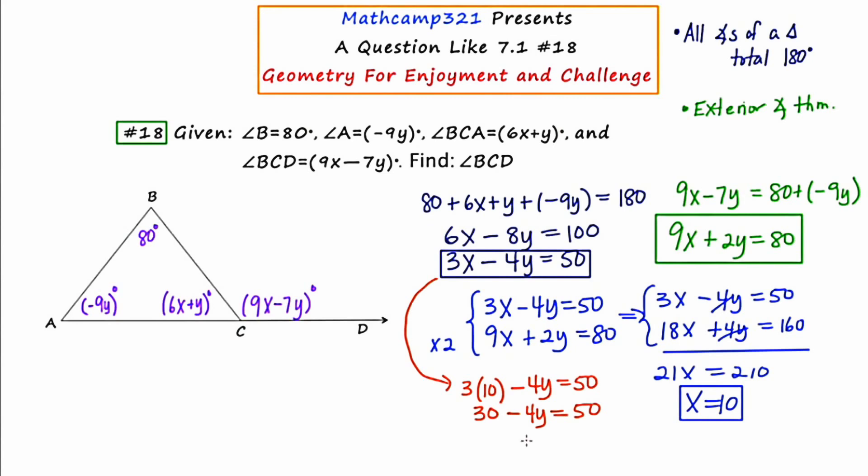And then I'll subtract 30 from both sides, leaving me with negative 4y equals 20. And finally, dividing by negative 4, I get y equals negative 5.